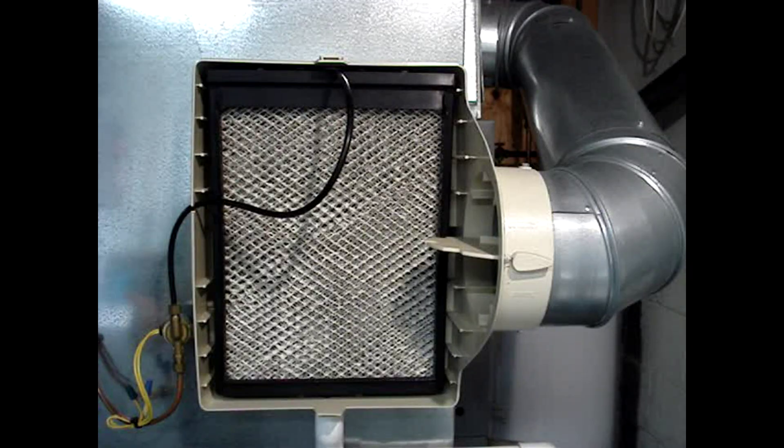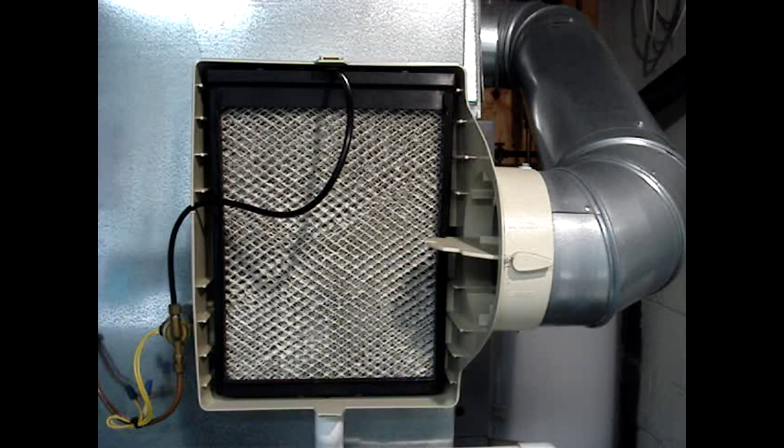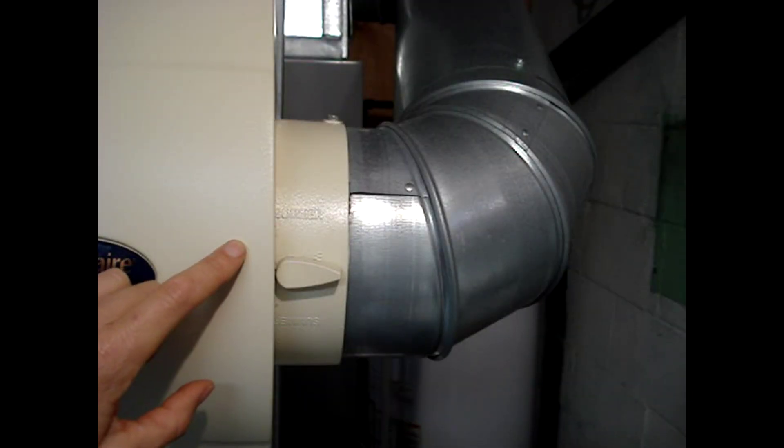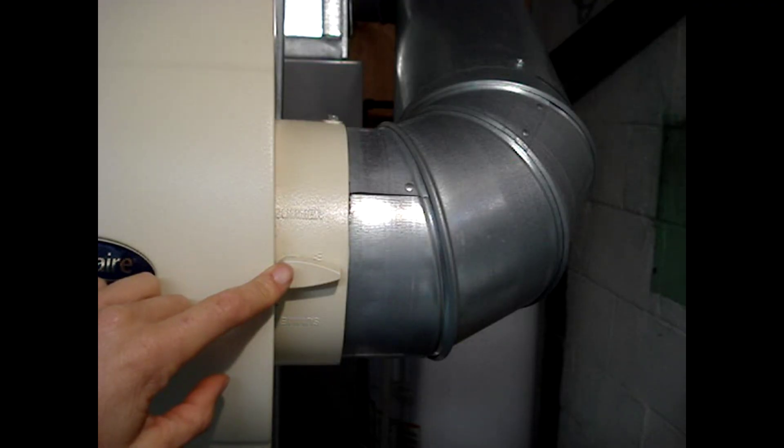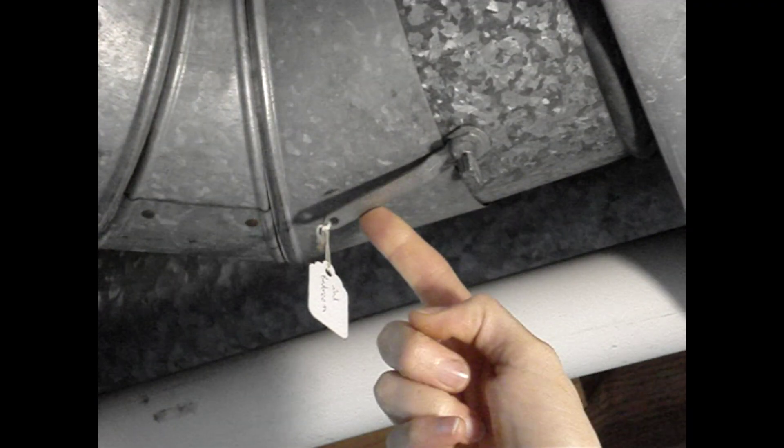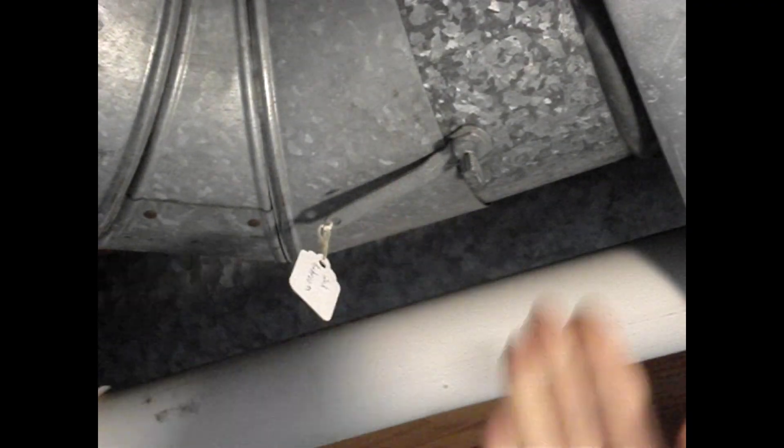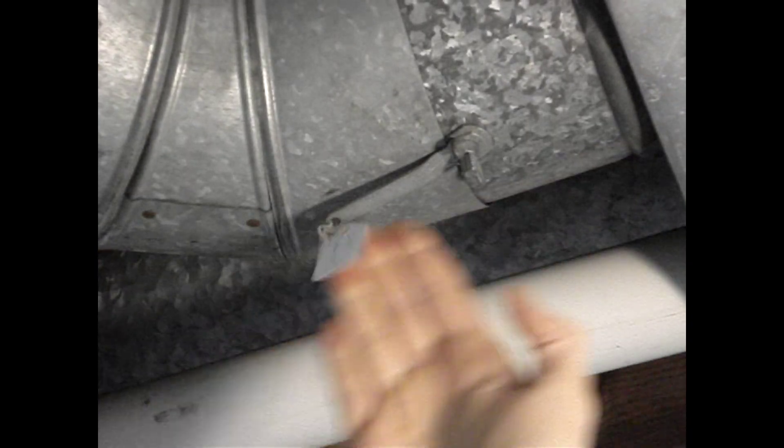The bypass type will have a damper on the humidifier or it could be on the ductwork. The damper is open when its handle is parallel with the ductwork.